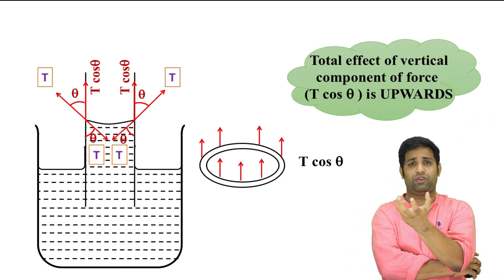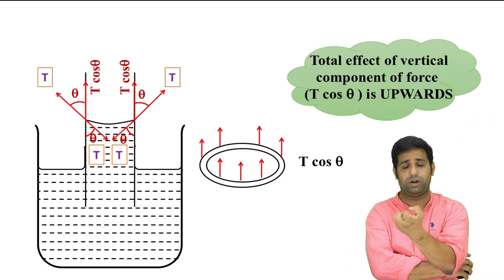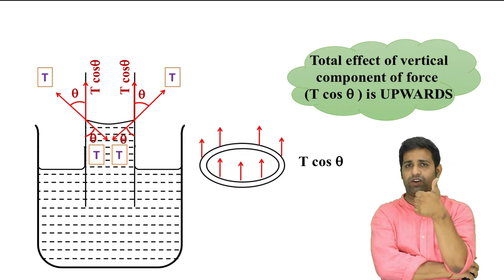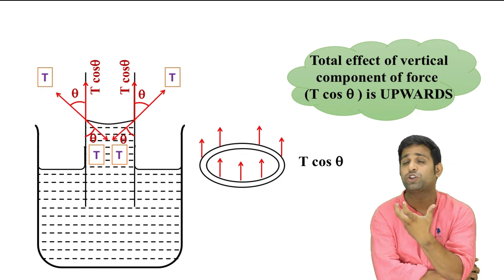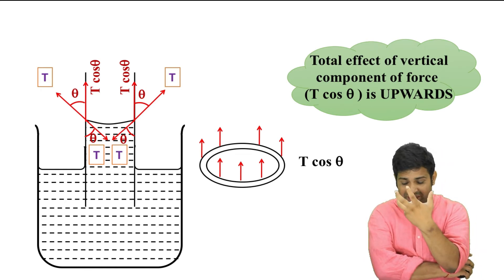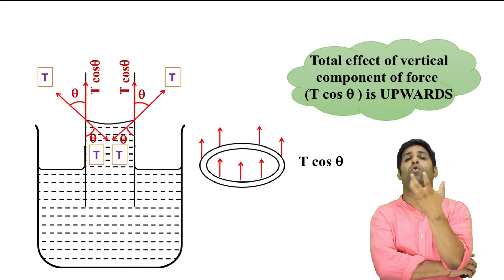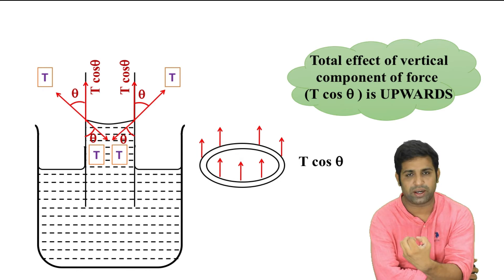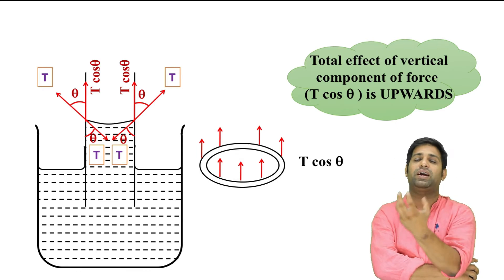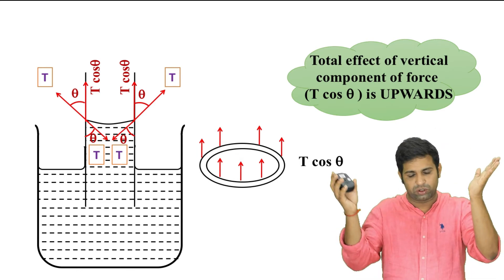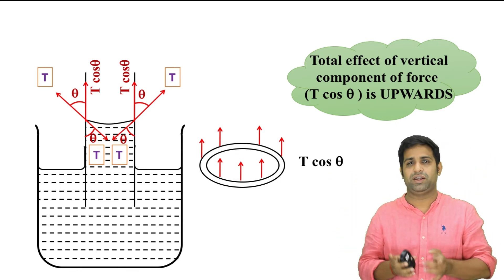To summarize: the surface of the liquid tries to contract. It pulls the wall due to surface tension with force T. By action and reaction the wall pulls back with T. The angle of contact is theta, and the force T is resolved — the upward component is T cos theta and the horizontal component is T sin theta.